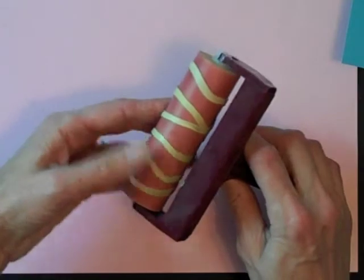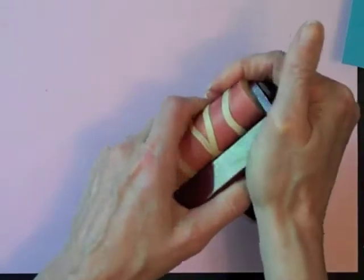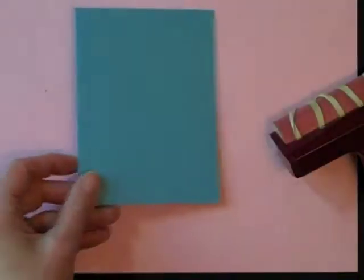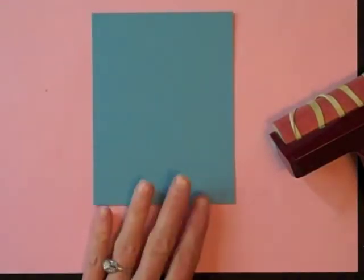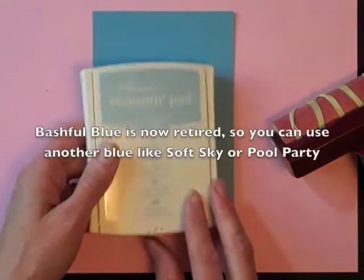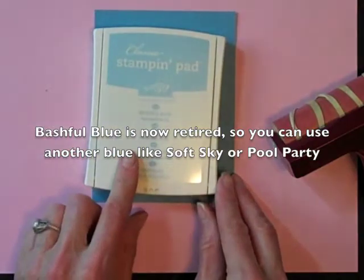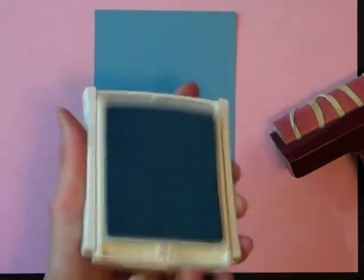And then we're just going to clip our brayer right back into the handle. So now I'm going to bring in our piece of Marina Mist cardstock and I'm also going to bring in some Bashful Blue Classic ink and what we're going to do is go ahead and ink up our brayer.